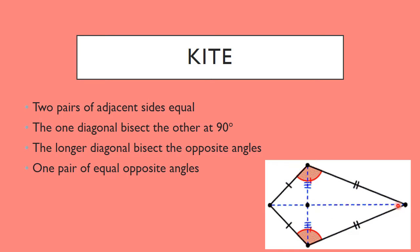The longer diagonal bisects the opposite angles, so this one angle gets cut into two equal parts, and the same happens at the other vertex. There is also one pair of equal opposite angles — indicated in red, these are the two 'fatter' angles of the kite. These two are equal to each other. The longer diagonal bisects those remaining angles into two equal parts.